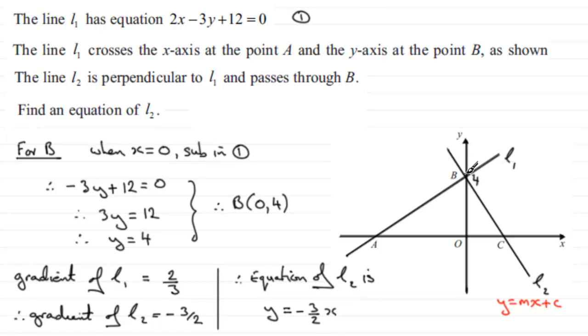c being the coordinate there, the y value of the intercept, it will be 4. It said, find an equation for L2, and I've come up with an equation. It's up to you whether you decide you want to rearrange this, but I'm just going to leave it like that.